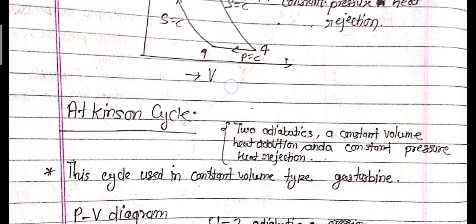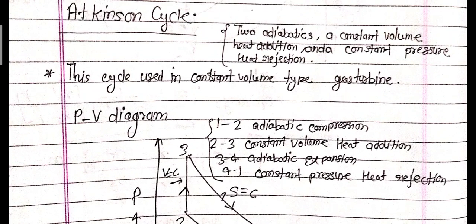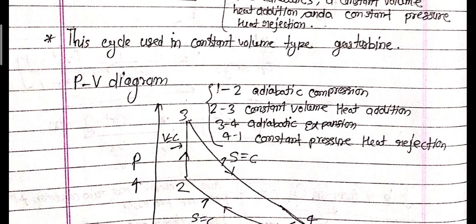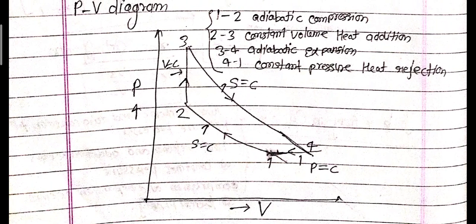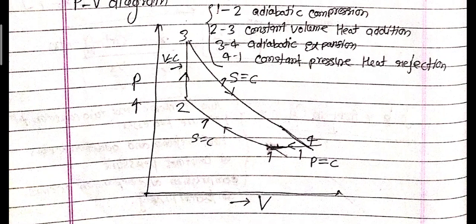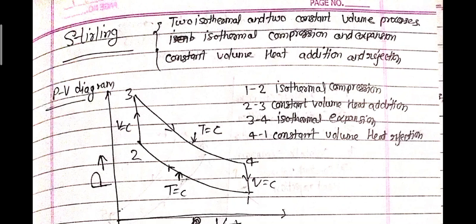The Atkinson cycle has two adiabatic processes, one constant volume heat addition, and one constant pressure heat rejection. This cycle is used in constant volume type gas turbines. Process 1 to 2: adiabatic compression. Process 2 to 3: constant volume heat addition. Process 3 to 4: adiabatic expansion. Process 4 to 1: constant pressure heat rejection.